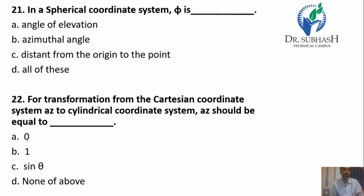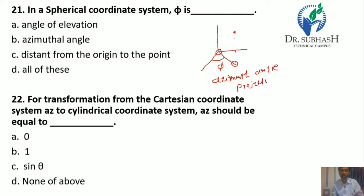Question 21: In a spherical coordinate system, φ (phi) is the azimuth angle — it is the angle between the x-axis and the projection of the point from the origin. So the answer is B.